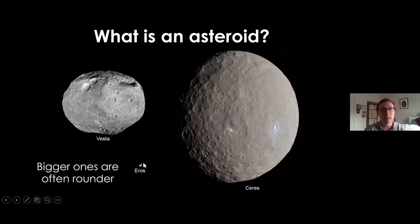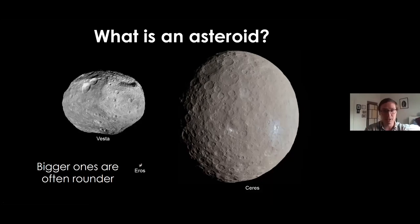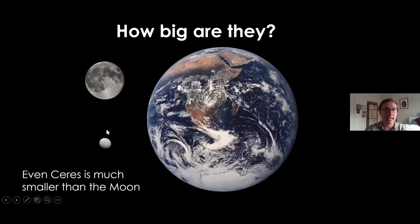You can see Eros down there, 30 kilometers across. Then we have Ceres, which is a dwarf planet because it's fully rounded out - in many ways it's a fully realized world. It just hasn't cleared its orbit of other asteroids because it's right in the middle of the asteroid belt. So it's the biggest of the asteroids or the smallest of the planets. Ceres is actually much smaller than Earth's moon.